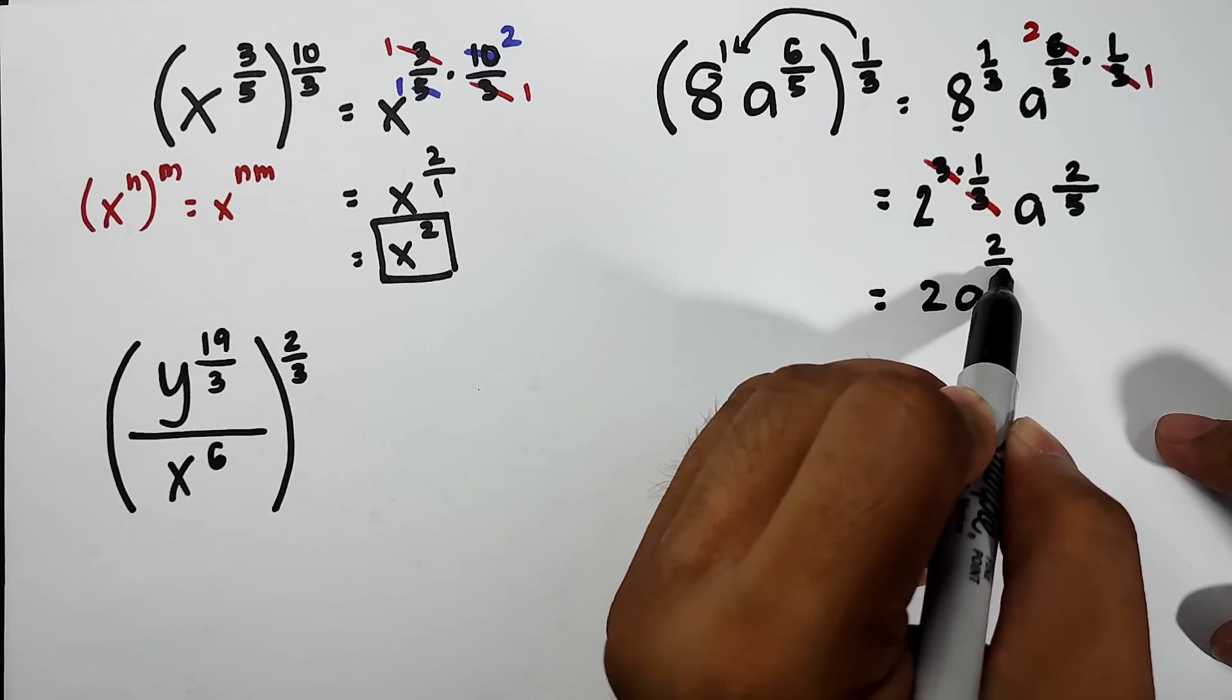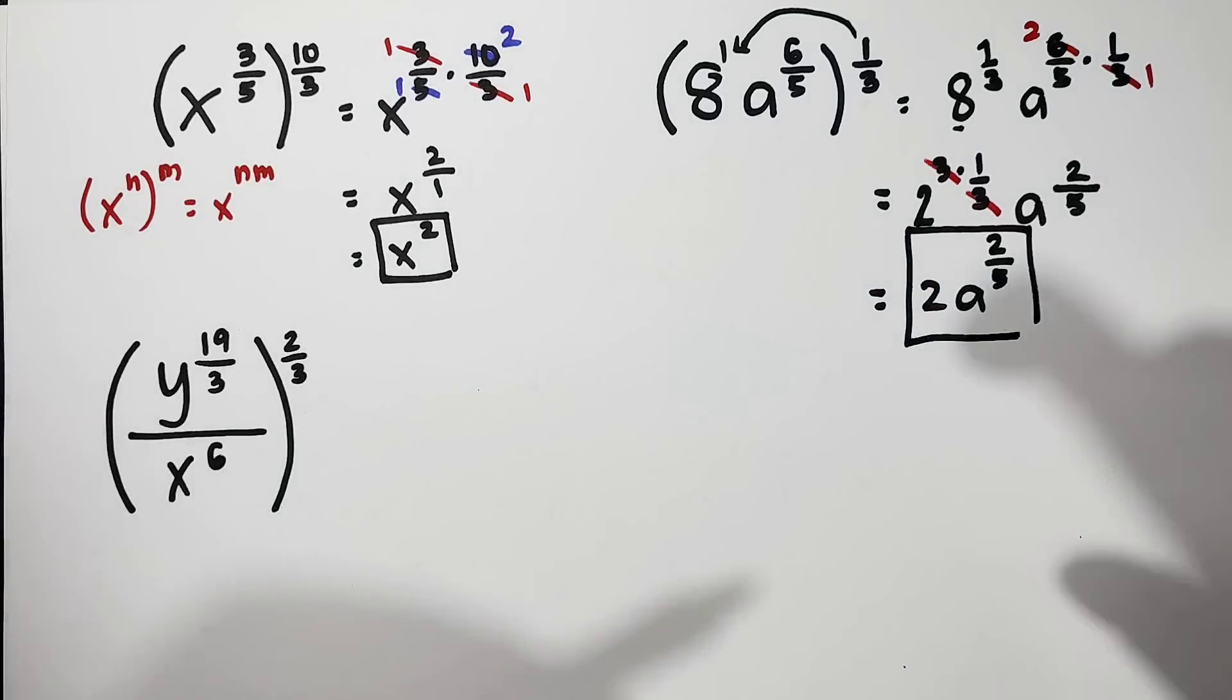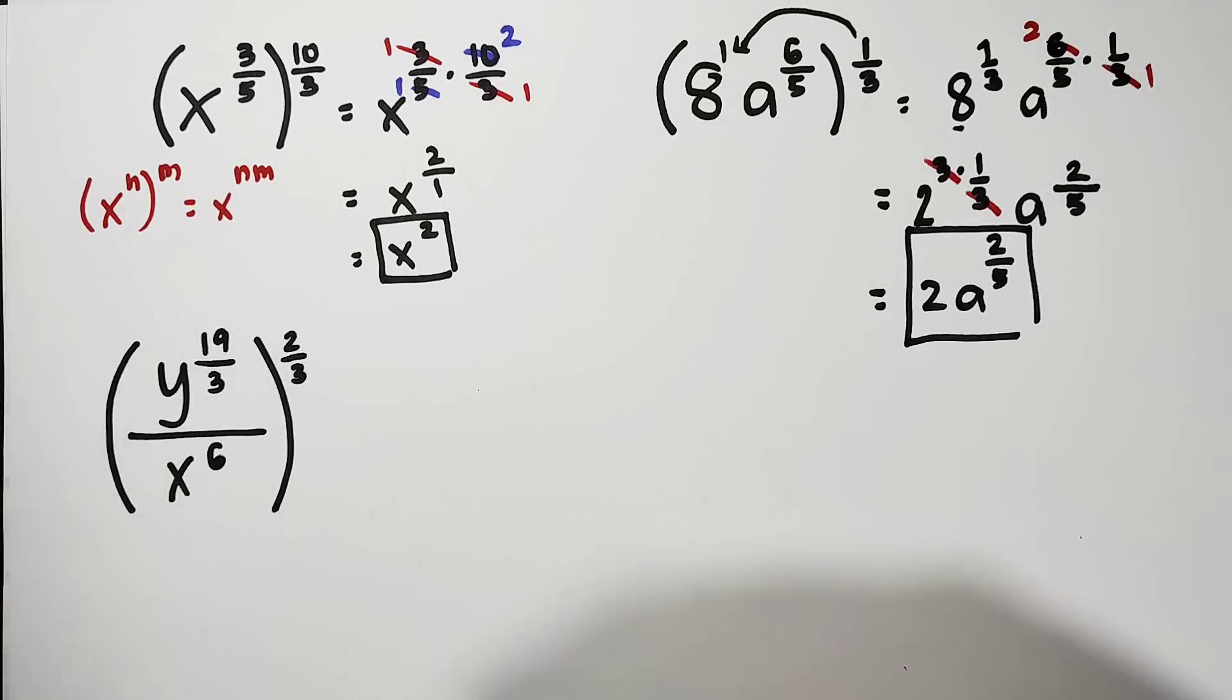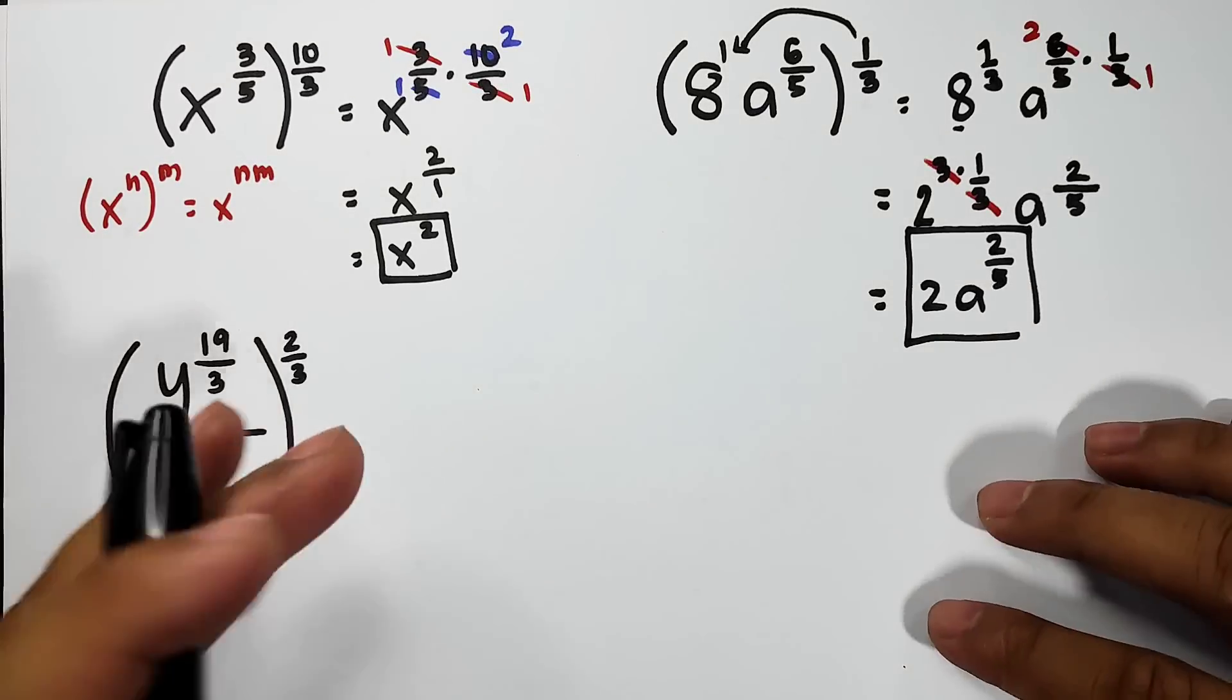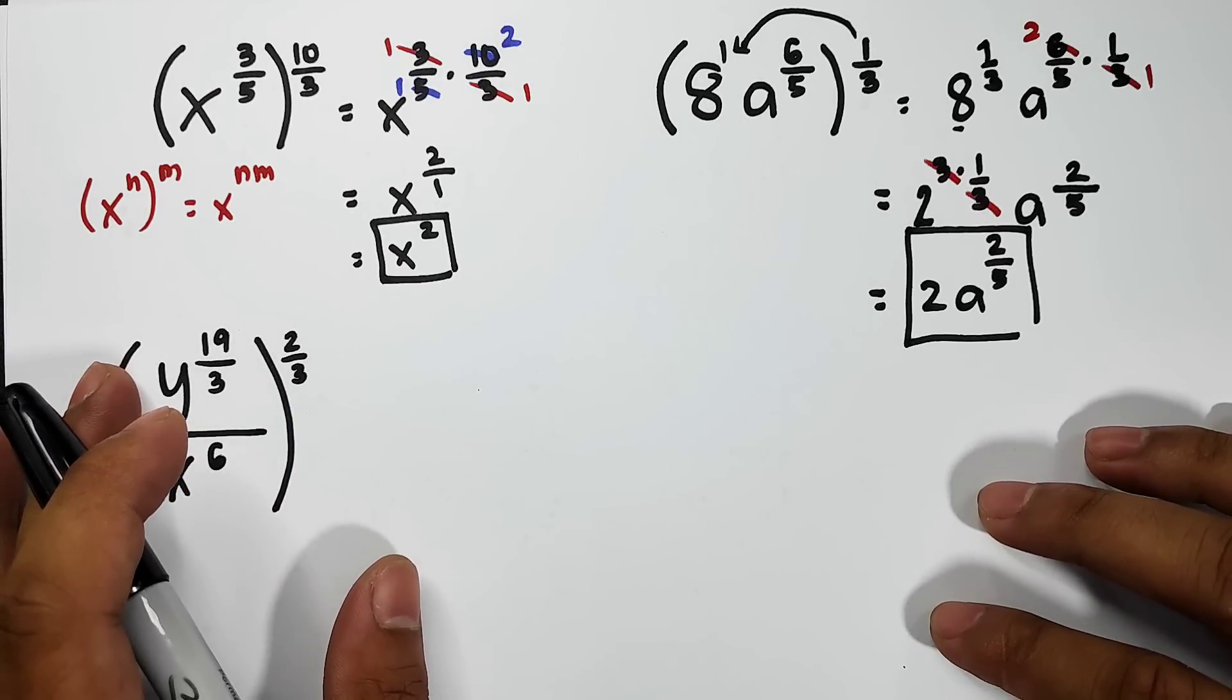And this is the answer for number 4. So I hope you're not confused with our solution. We're using cancellation so that our solution won't be too long, because when you take an exam, it's much better if the time is faster.